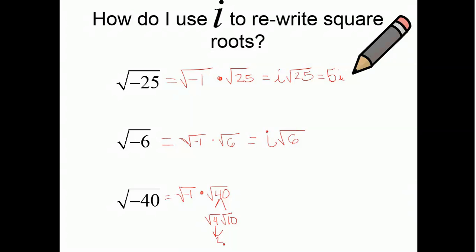Well, the square root of 4, we know that to be 2. And this is i right here. So, I'll rewrite this. I have 2i and then the square root of 10. So, 2 times i times the square root of 10 is equal to the square root of negative 40.